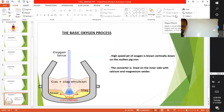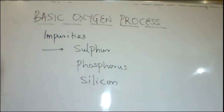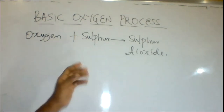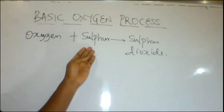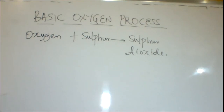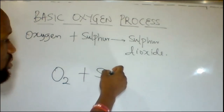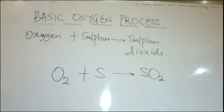How is iron refined to make steel? There are several processes involved; today we are looking at the basic oxygen process. This is a process in which oxygen is blown directly at the top of the molten iron to form steel. The impurities present in iron from the blast furnace include sulfur, phosphorus, and silicon, which must be removed. In the basic oxygen process, oxygen at very high temperatures is blown vertically downwards across the surface of the molten iron. It reacts with sulfur to form sulfur dioxide, which is tapped off.